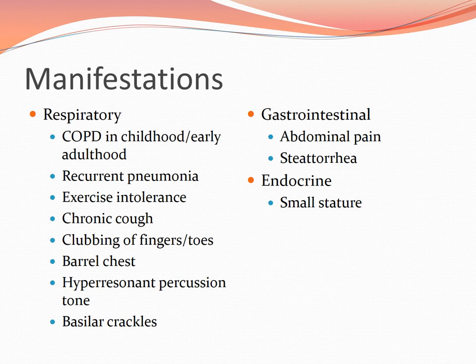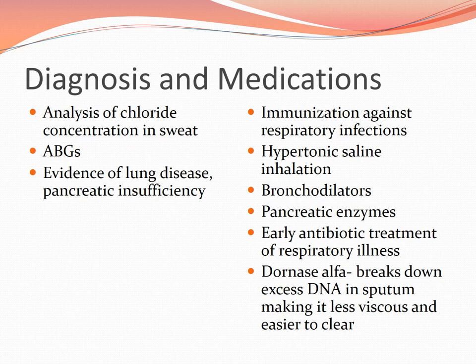Manifestations include COPD in early childhood, recurrent pneumonia, exercise intolerance, chronic cough, clubbing of fingers and toes, barrel chest, and hyperresonant percussion — similar signs to COPD. Additional GI manifestations include abdominal pain and steatorrhea — greasy, malodorous stool — and small stature. Diagnosis involves measuring sodium concentration in sweat, ABGs, and evidence of lung disease. Treatment includes immunization, hypertonic saline inhalation, bronchodilators, pancreatic enzyme replacement pills, and early antibiotics for respiratory illness.